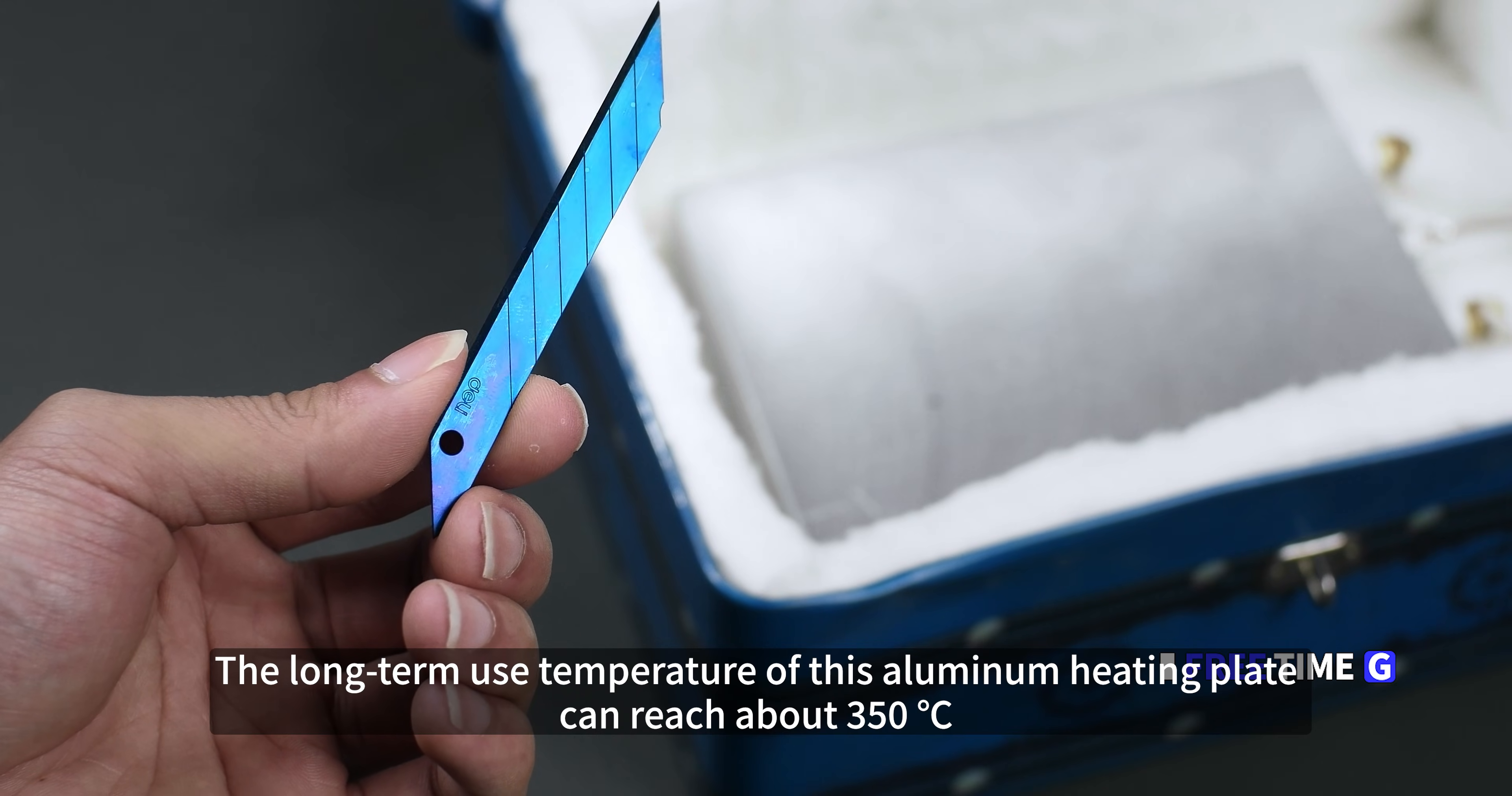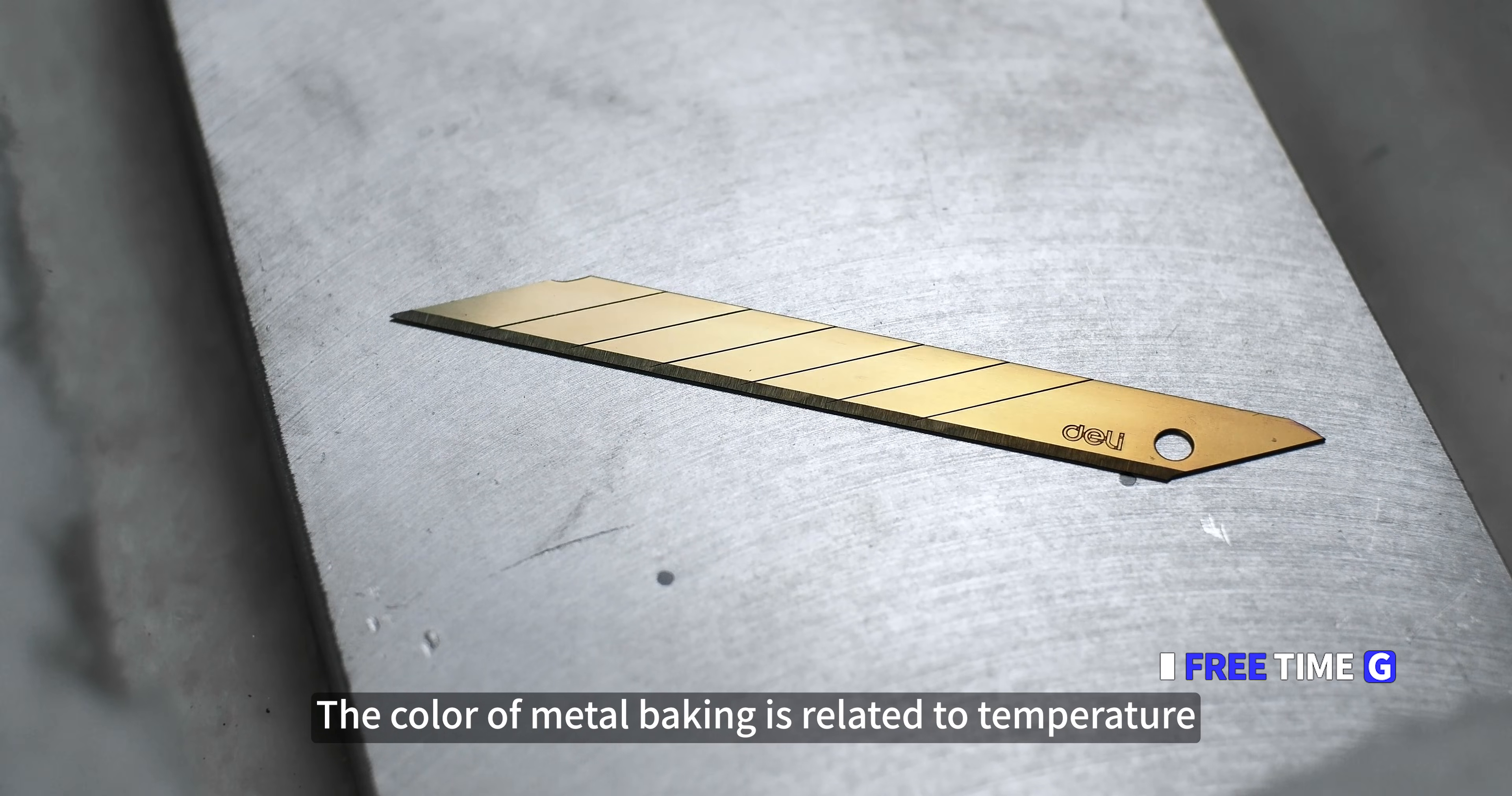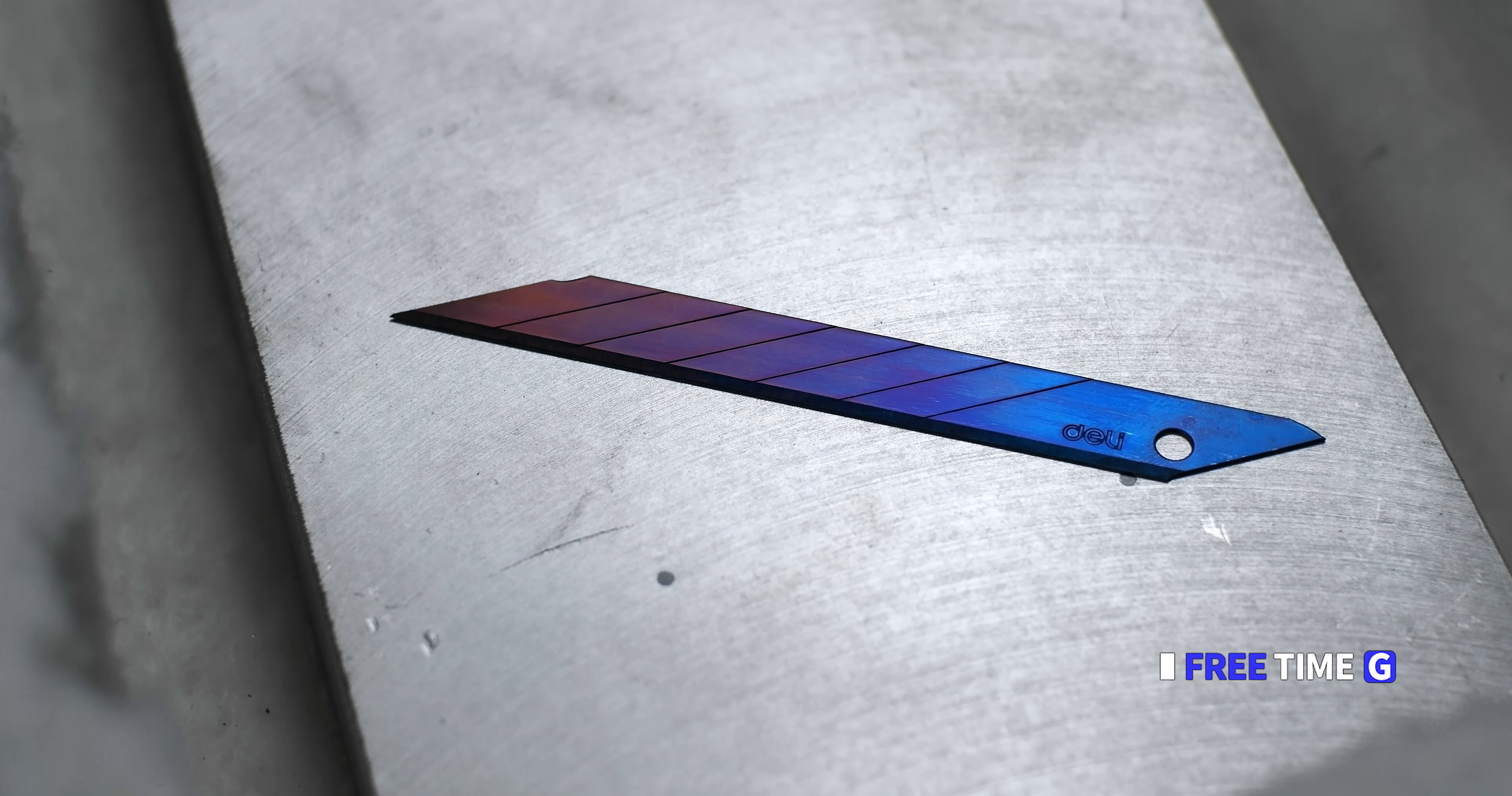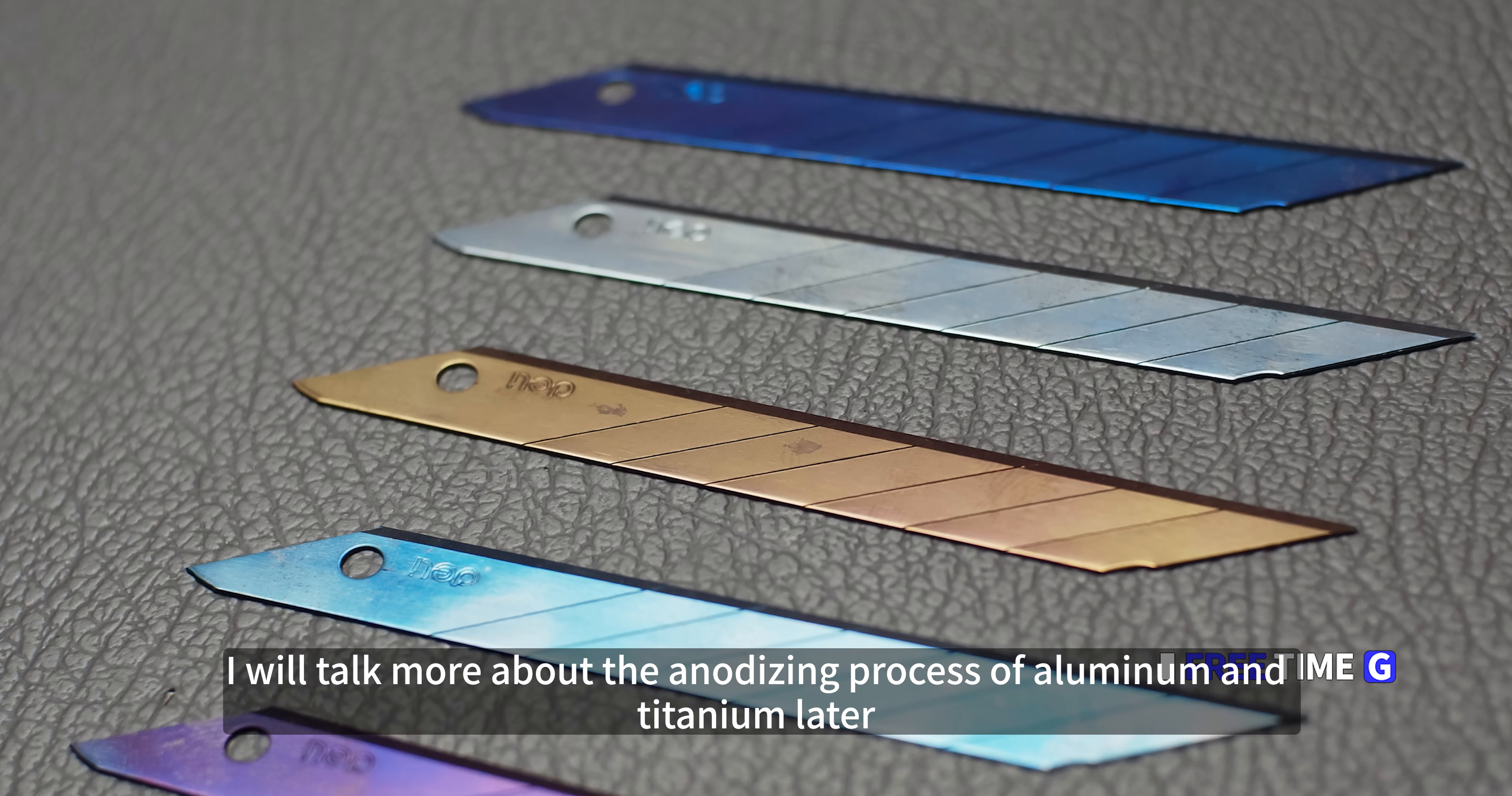The long-term use temperature of this aluminum heating plate can reach about 350 degrees. Of course, it can be heated to a higher temperature, but it will affect its service life. The color of metal baking is related to temperature. Just control the temperature, you can bake out a pure color. Just a simple test here. No surface treatment process. So this color won't last for a few days. I will talk more about the anodizing process of aluminum and titanium later.